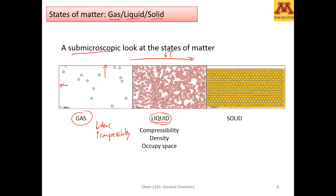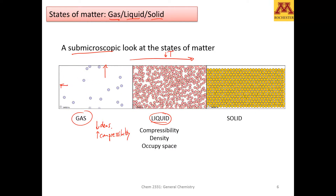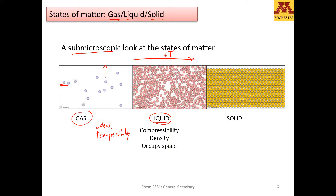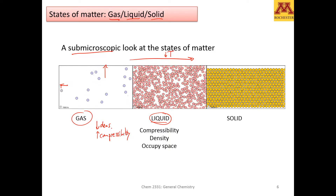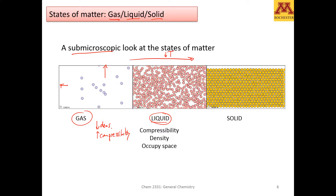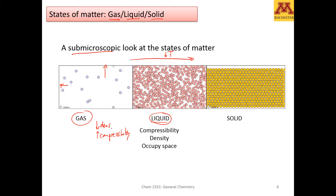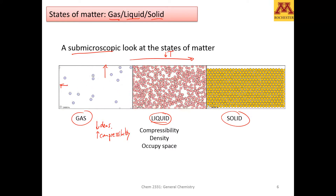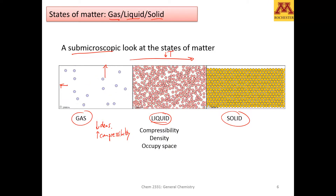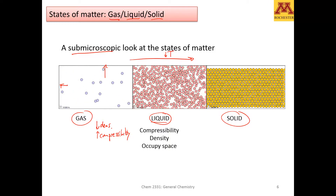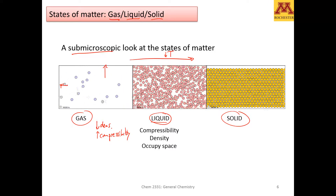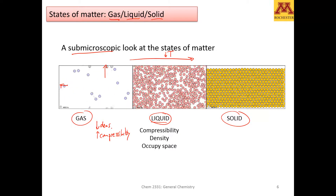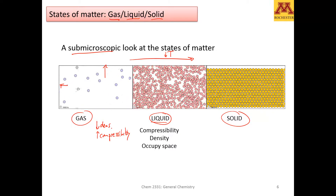We will talk about phase diagrams, and that will make sense, because not all substances at a given pressure go through liquid. Some of them go from gas to solid as you lower the temperature. In the solid state, molecules or atoms do not move around anymore. While they interact very strongly with neighboring atoms or molecules, they do not switch places like the liquid does.